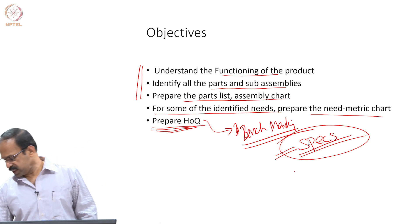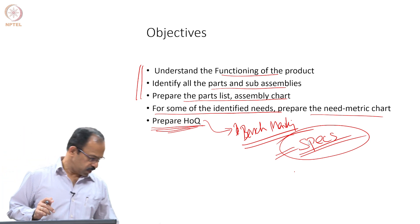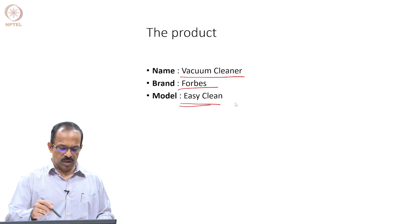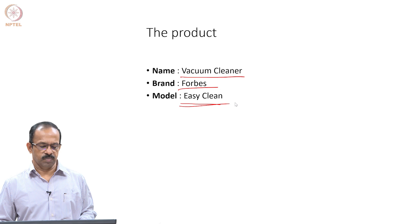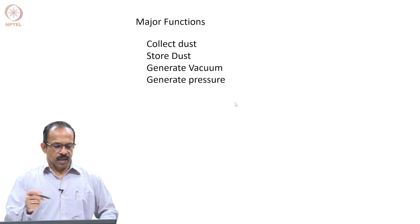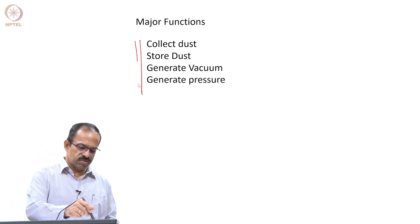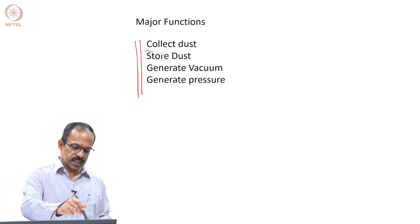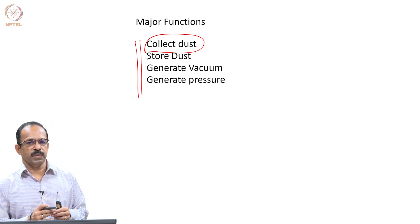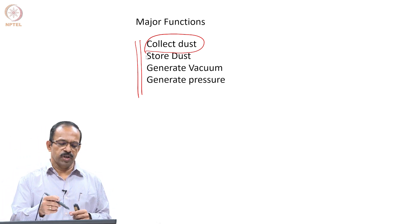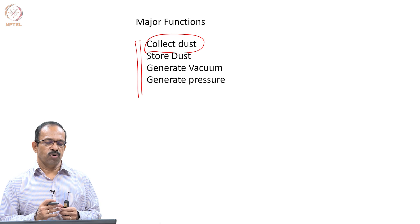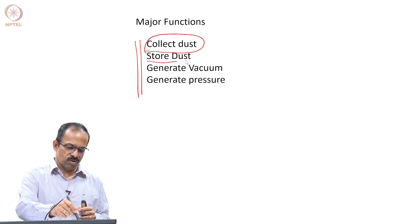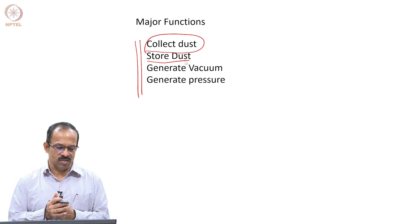If you look at the product, the vacuum cleaner is a Forbes brand and the model is known as Easy Clean. If you look at the major functions, one of the main functions is to collect dust from the surface — whether it is a carpet, floor, or cushion. It is not just to collect dust; you need to store it also, so you need some mechanism to store the dust.